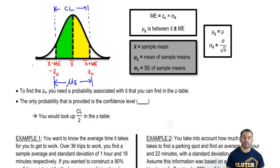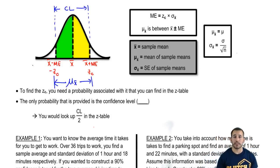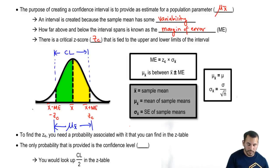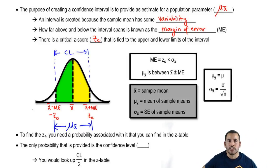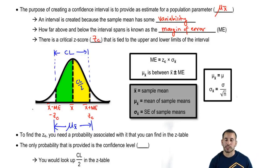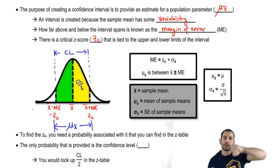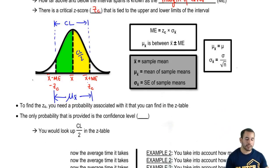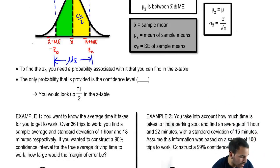To find the Z critical, you need a probability associated with it that you can look up in the table. Our Z table works off of the area from 0 to Z — that would be the yellow shaded area. If they give you the confidence level, that goes from the green all the way to the yellow, but the yellow is just half of that. So this area is the confidence level over 2, and that's what you look up in the table in the probability section and work your way backwards to a Z score. That's how you get the critical Z — you look up the confidence level over 2.